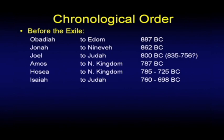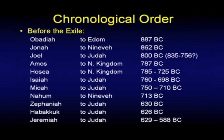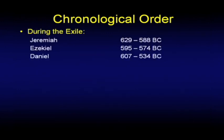Isaiah overlaps some of these, from 760 to 698. Then Micah and Nahum, then Zephaniah and Habakkuk and Jeremiah. Jeremiah is listed here because he starts before the exile, but he's usually also listed as an exile prophet. During the exile we have Jeremiah, followed by Ezekiel in Jerusalem at the time, and Daniel, who was deported in the first deportation — 607.